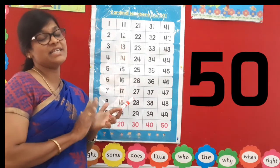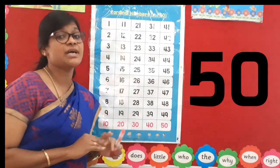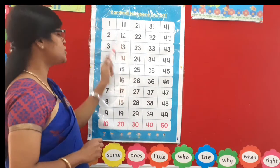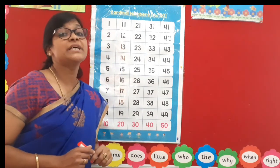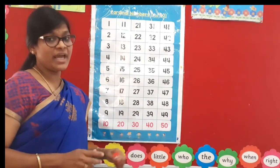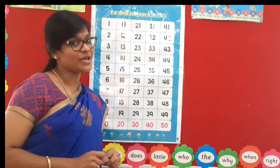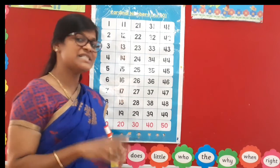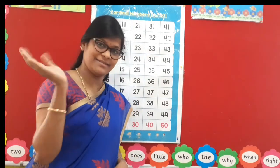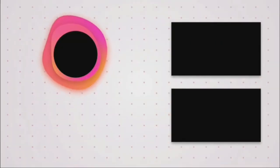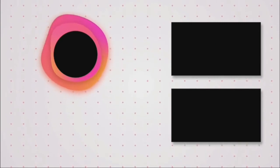Well done kids, well done. Very good kids, very good. I hope you could have identified the numbers 1 to 50. Do your regular practice to identify the numbers 1 to 50. Okay? And you should practice to write them as well. Okay then, see you soon in the next math class. Bye-bye kids, bye-bye.